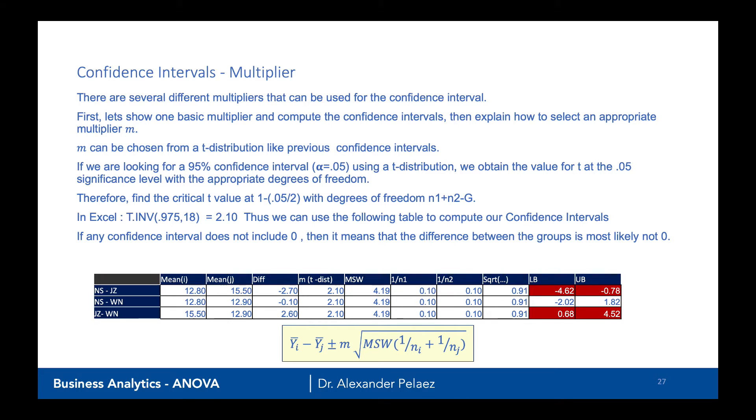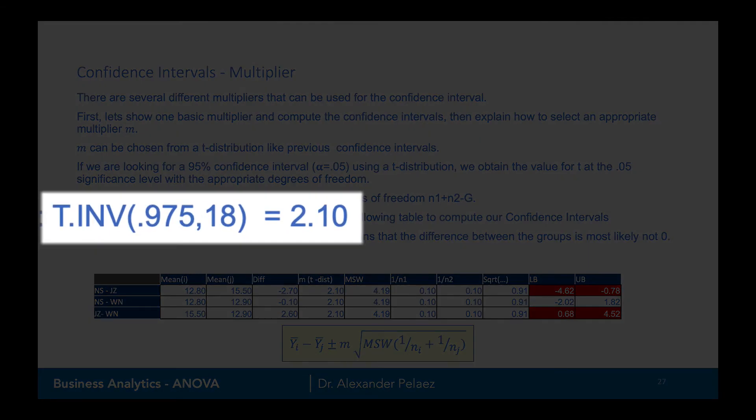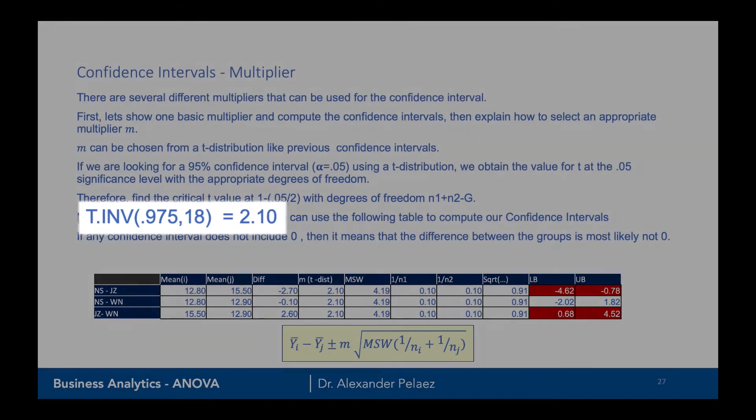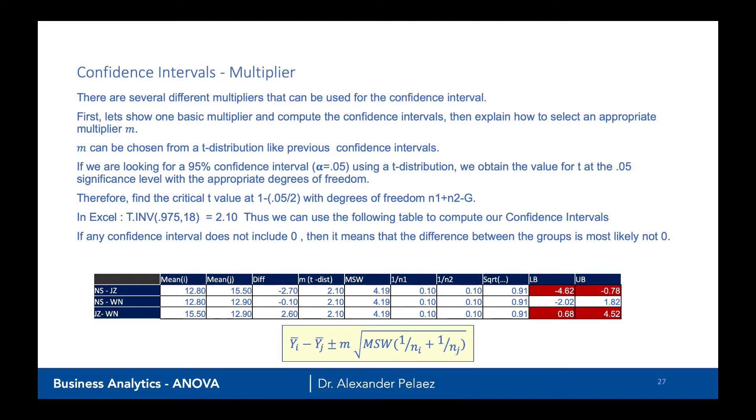So in this case, we will use T.INV(0.975, 18). That corresponds to the 1 minus 0.05 divided by 2 here, comma 18, because we have 20 total observations, 10 in one group, 10 in the other group, and we're subtracting 2 for the number of groups that we're comparing. This will give us our computed value of T at 2.10.